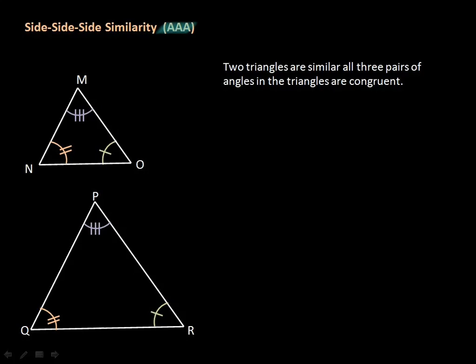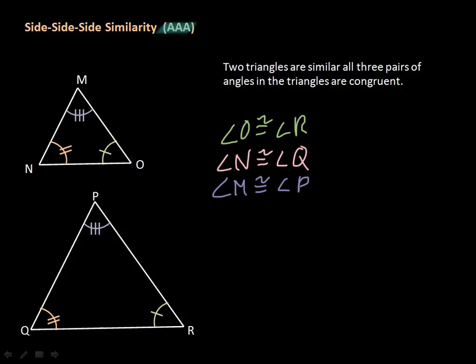All we have to do is list our pairs of congruent angles. Angle O is congruent to angle R, angle N is congruent to angle Q, and angle M is congruent to angle P. We don't have to worry about ratios here because we're only talking about angles. So the triangles are similar by Angle-Angle-Angle.